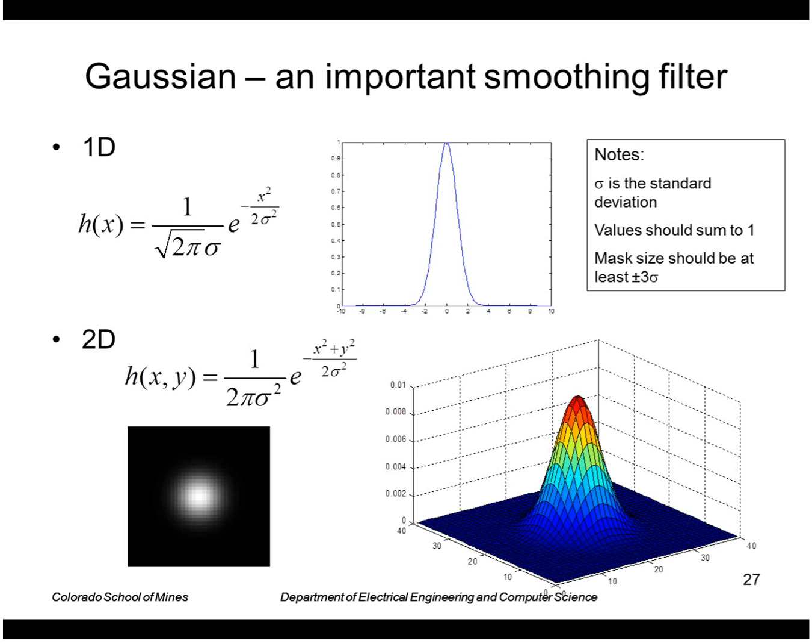When you implement this digitally, you can't go to infinity, so you cut it off where the values are pretty close to zero, generally about three sigma out from the center. The normalizing coefficient won't be quite accurate then, so just sum all your values and divide by that sum to ensure they sum to one.